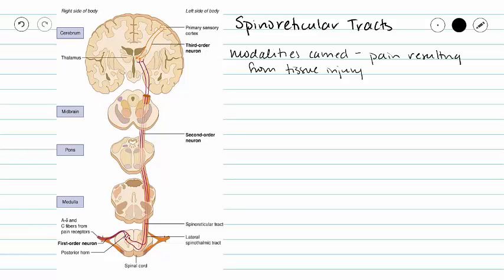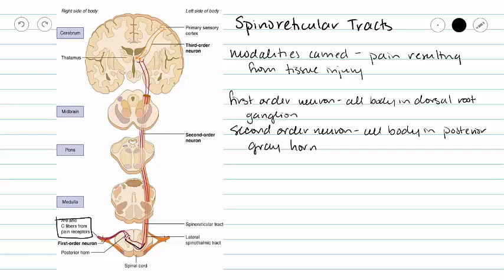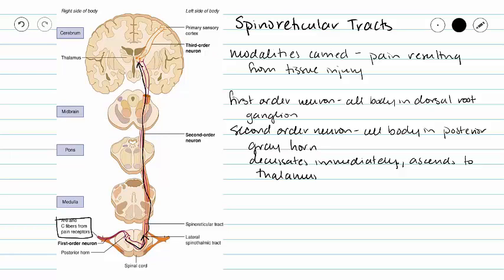Our first order neuron cell body is going to be in our dorsal root ganglion and our first order neuron is going to bring these pain sensations into our posterior grey horn. In our posterior grey horn we synapse to a second order neuron, and then our second order neuron is going to decussate right away before ascending all the way up to our thalamus where our second order neuron synapses to a third order neuron.